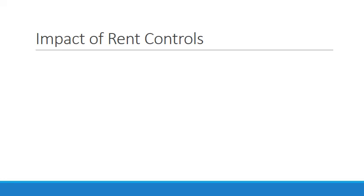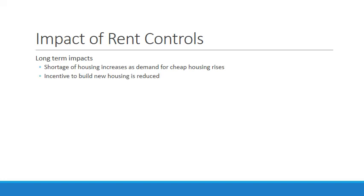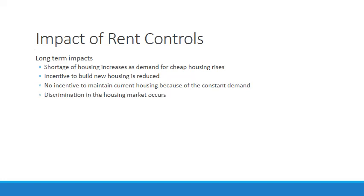The long-term impacts of rent controls on the economy: the shortage of housing increases as demand for cheap housing rises; the incentive to build new housing is reduced; and there's no incentive to maintain current housing because of constant demand. Discrimination in the housing market occurs — apartments are not in good quality, a large number of people are trying to get into them, and there's no reason to build new ones, leading to very low-income housing conditions and firms being selective about who they rent to.